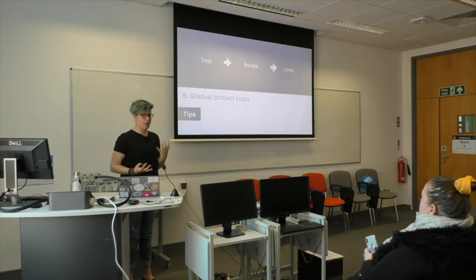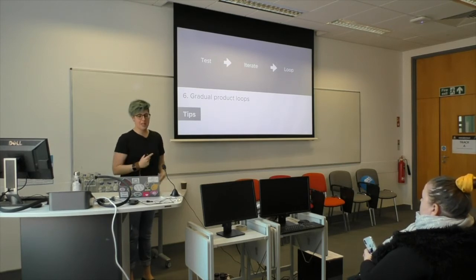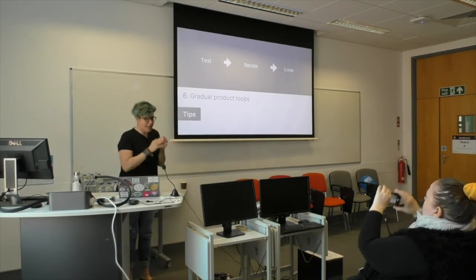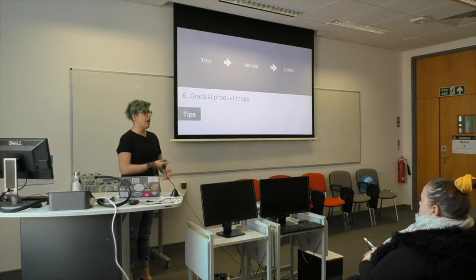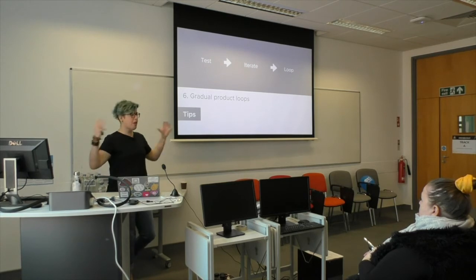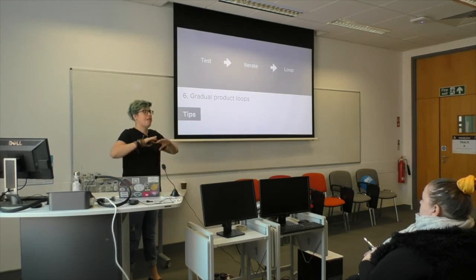There should be a product loop — a simple but incredibly important one: test, iterate, repeat. Do small loops often. Big product cycles are done, but do tiny little loops and increase their size as you allow for development and complexity. Once released, stay in this loop. Looping like this keeps the bubble from surrounding you — it keeps you listening to a broad section of people. Don't assume everything is flowing just because nobody's told you there's a problem.